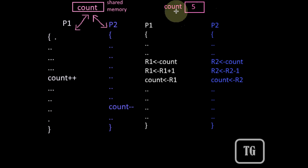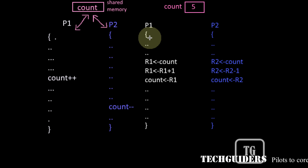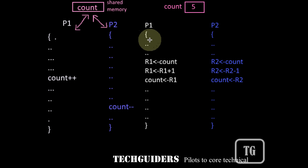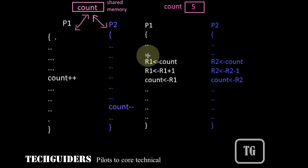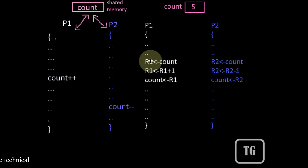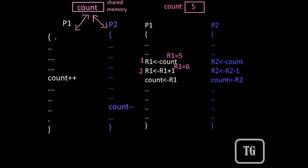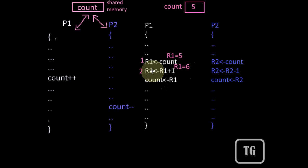The initial value of count is 5. Suppose process P1 gets the processor first and starts execution. It executes instructions and loads its temporary register R1 with the value of count. The content of register R1 is 5. The register content is then incremented, making the value 6. Suppose at this point preemption takes place and P1 leaves the processor.